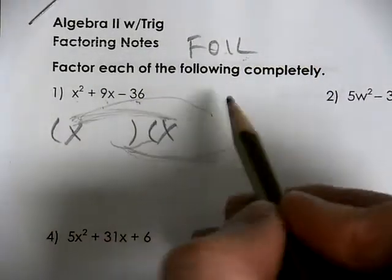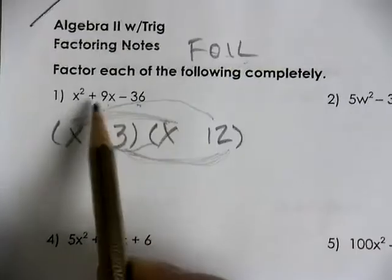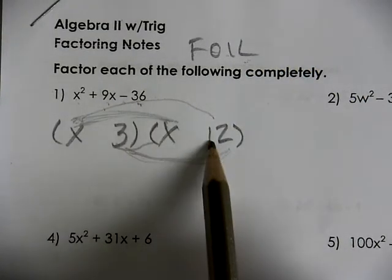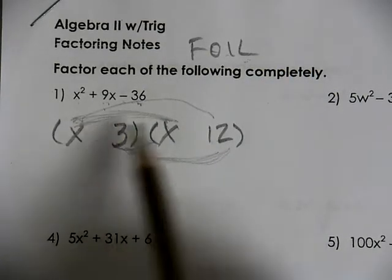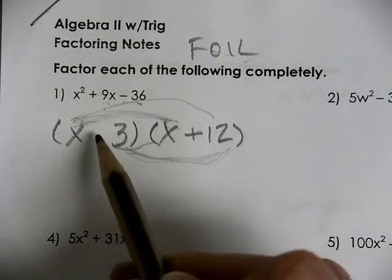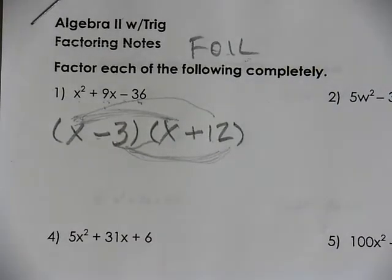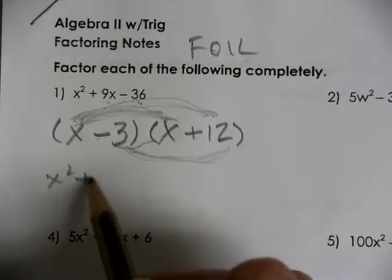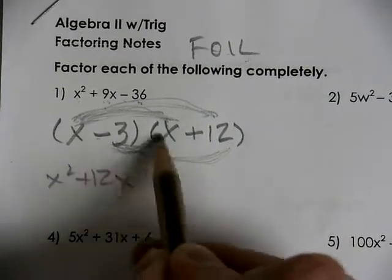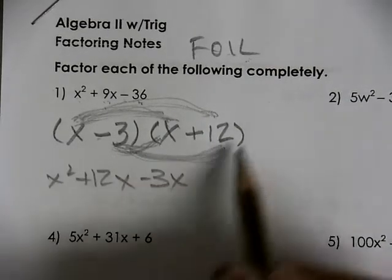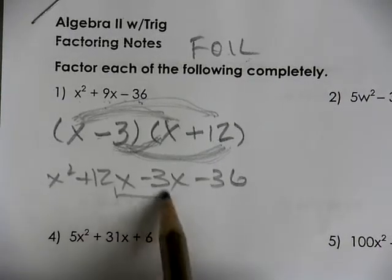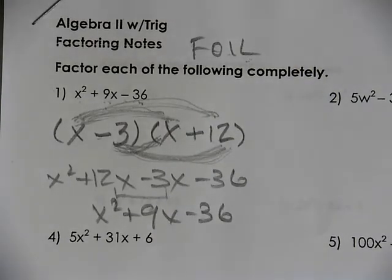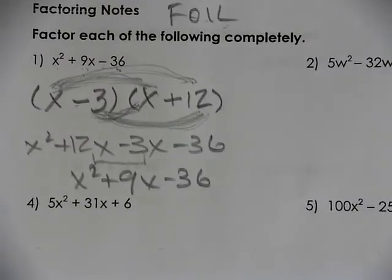We come up with 12 and 3. If it's going to multiply to be negative 36, one of these has to be negative. If it's going to add to be a positive 9, the larger number has to be positive. We can check this answer by FOILing through: x times x gives x squared, x times 12 gives 12x, negative 3 times x gives negative 3x, and negative 3 times 12 gives negative 36. Collect like terms and you'll see we have what we started with. All factoring questions can be verified by FOILing them back together.